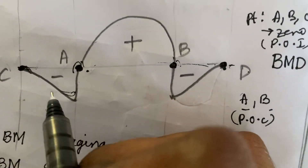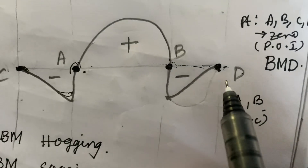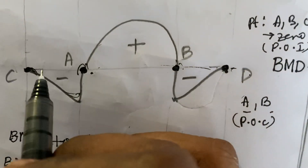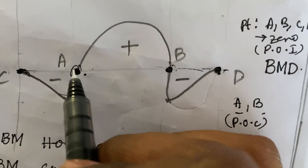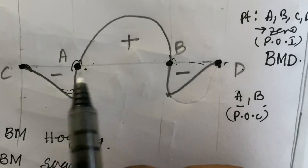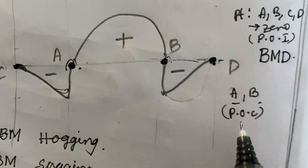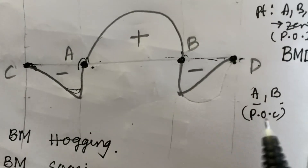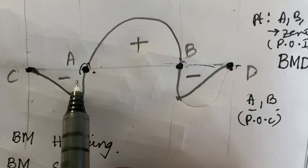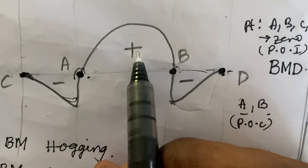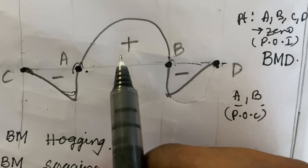It is only the curve reaching from positive to negative or negative to positive and touching the reference line — only these two points A and B are the points of contraflexure. The negative bending moment is hogging and the positive bending moment is sagging. Please keep this in mind, dear students.